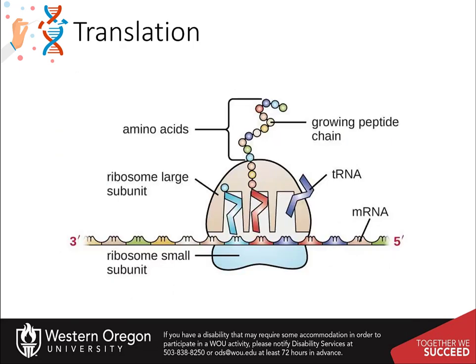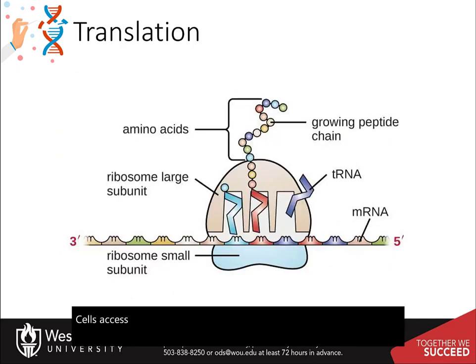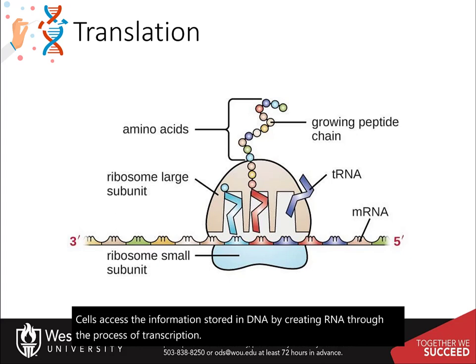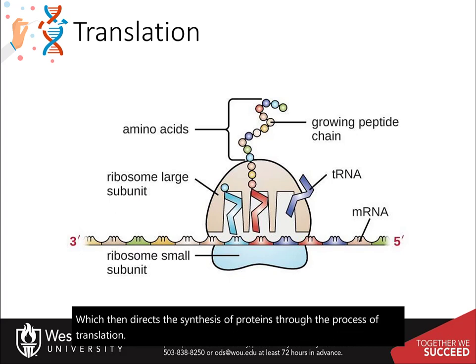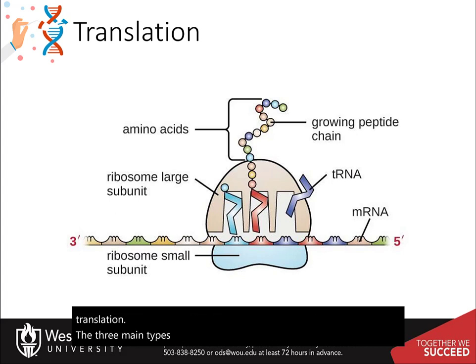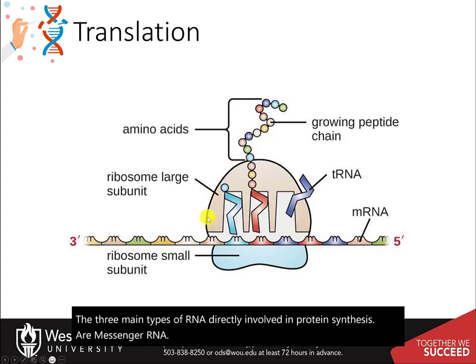Cells access the information stored in DNA by creating RNA through the process of transcription, which then directs the synthesis of proteins through the process of translation. The three main types of RNA directly involved in protein synthesis are messenger RNA, ribosomal RNA, and transfer RNA.